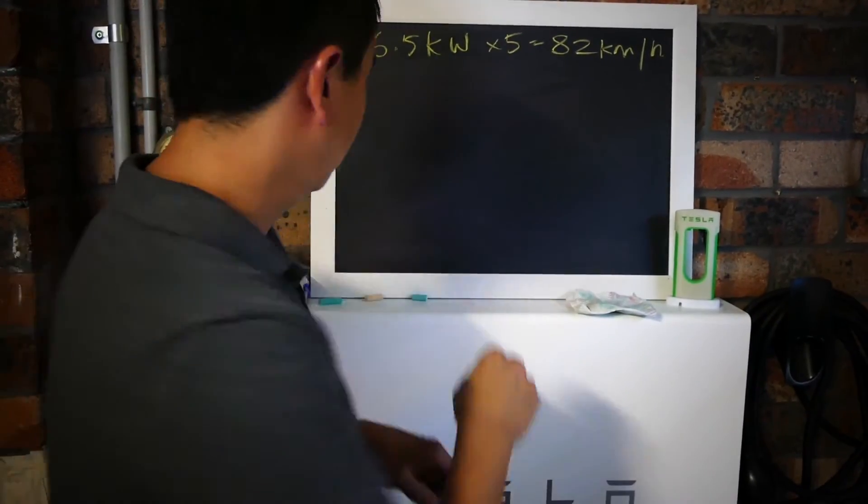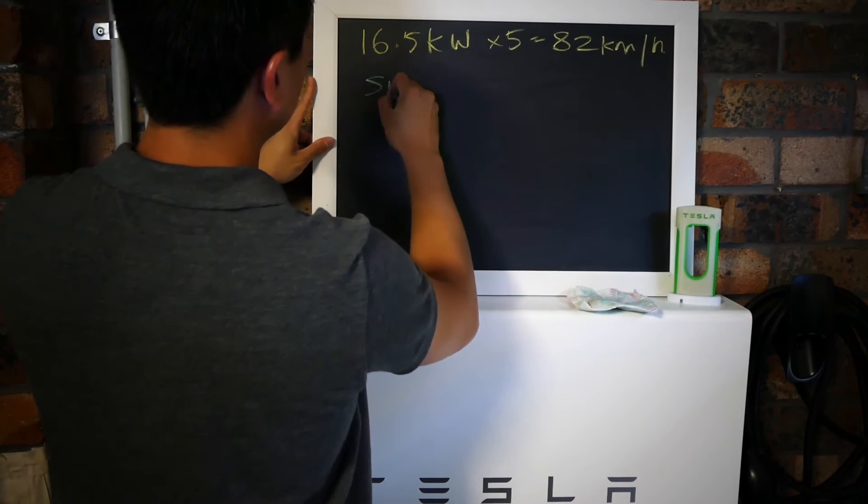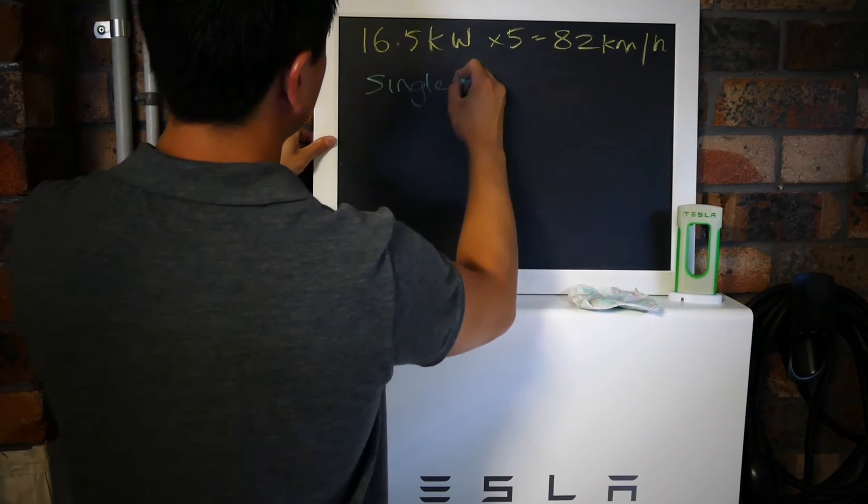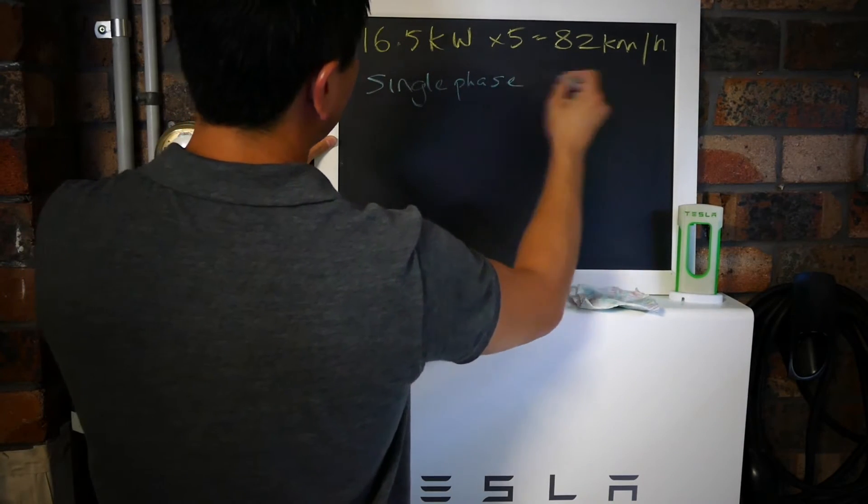There's two types of wall connectors: the single phase and the three phase.